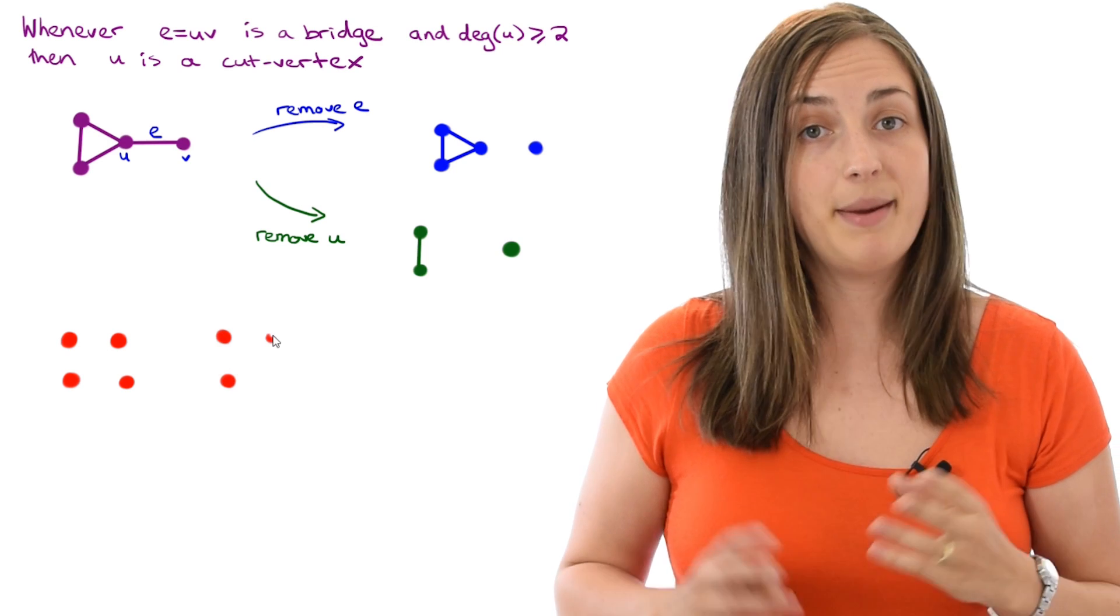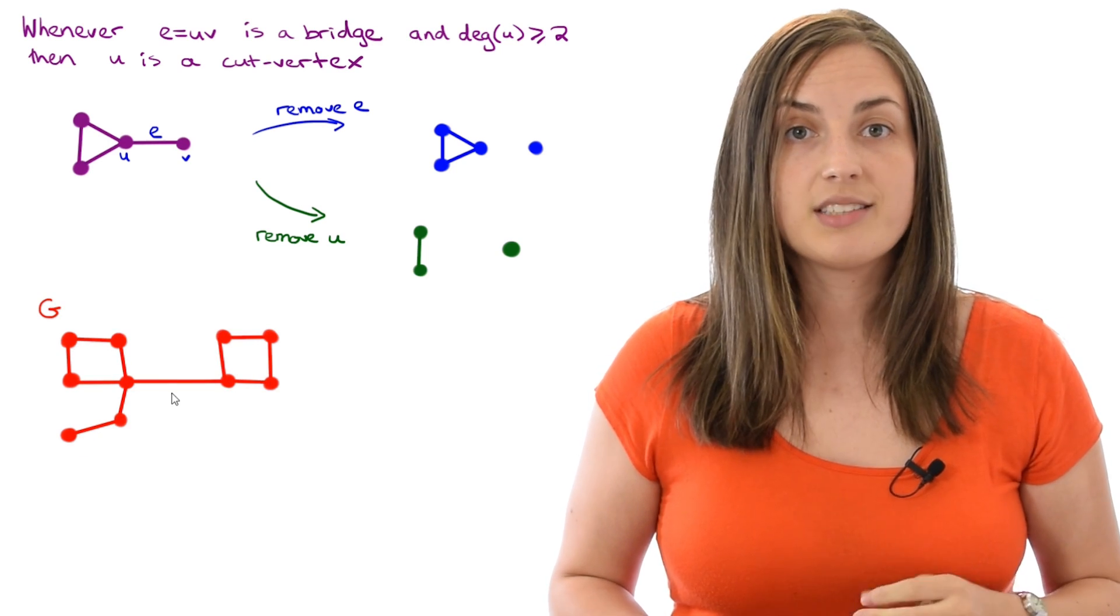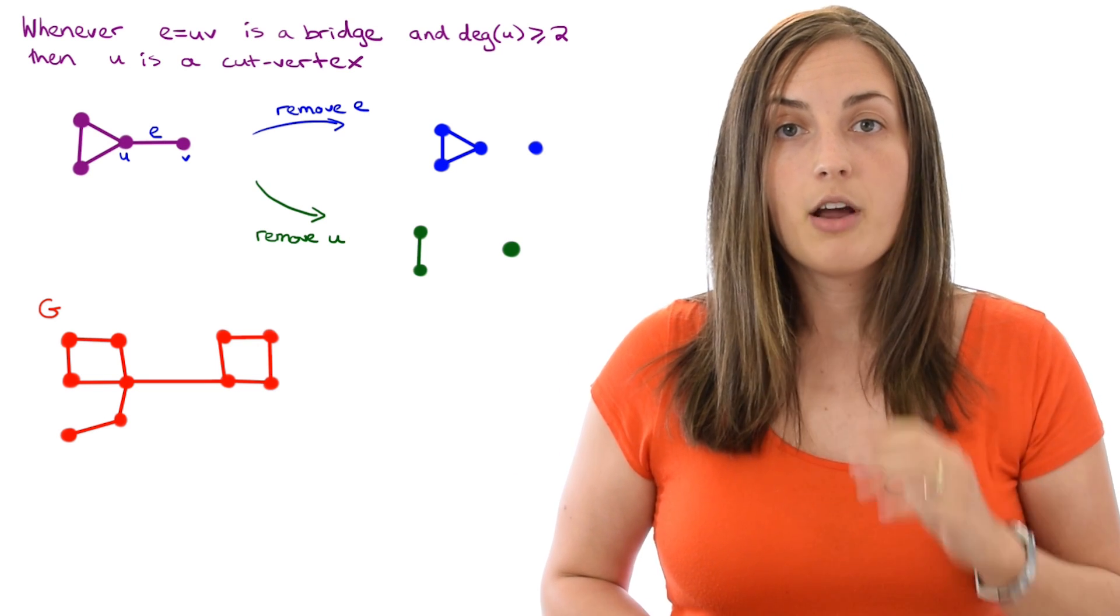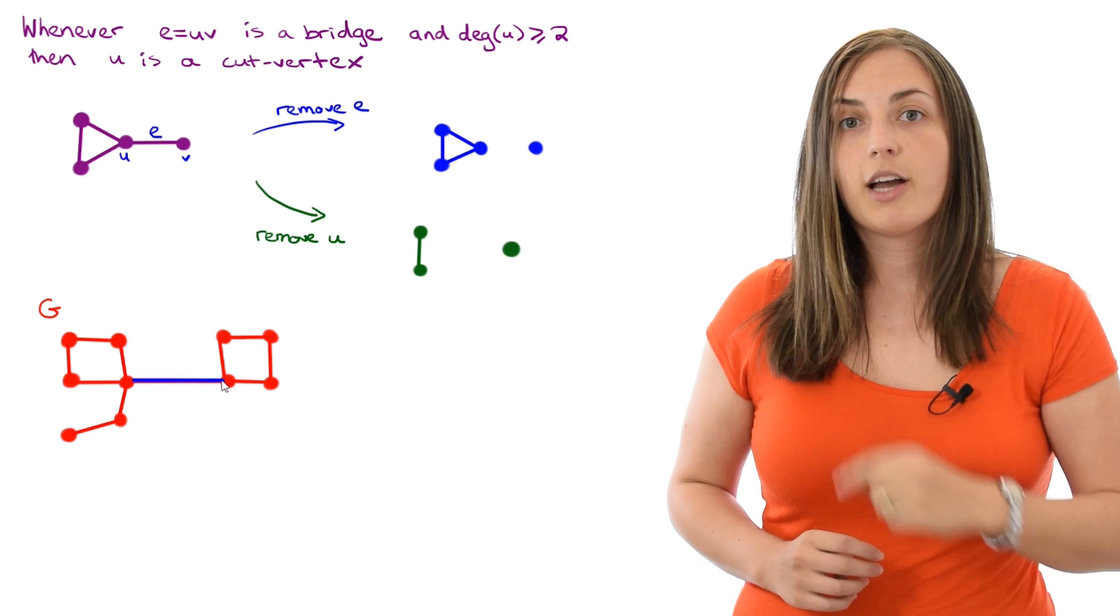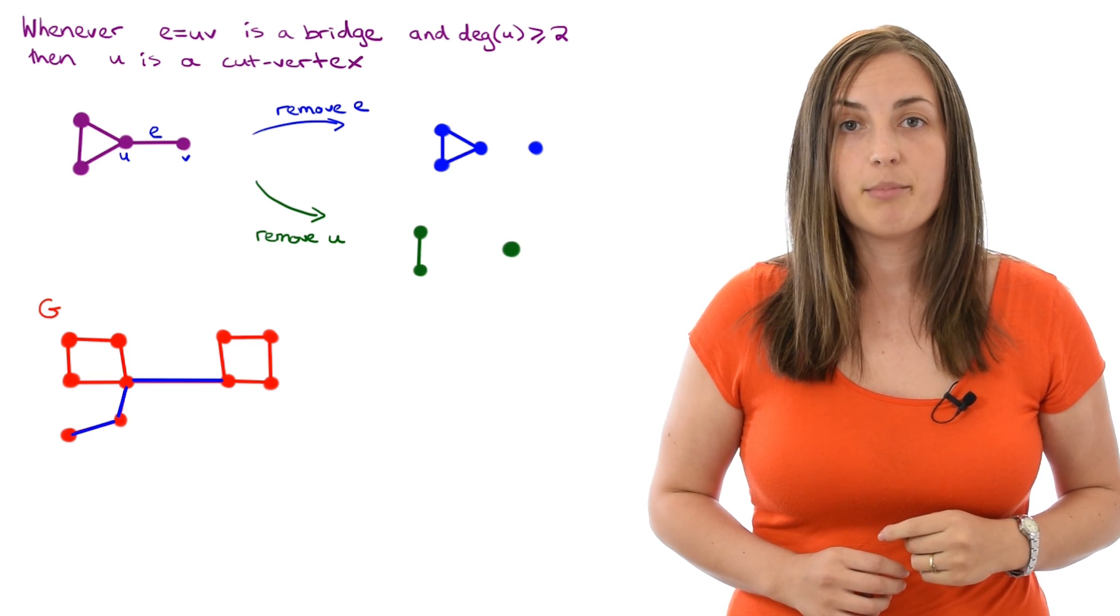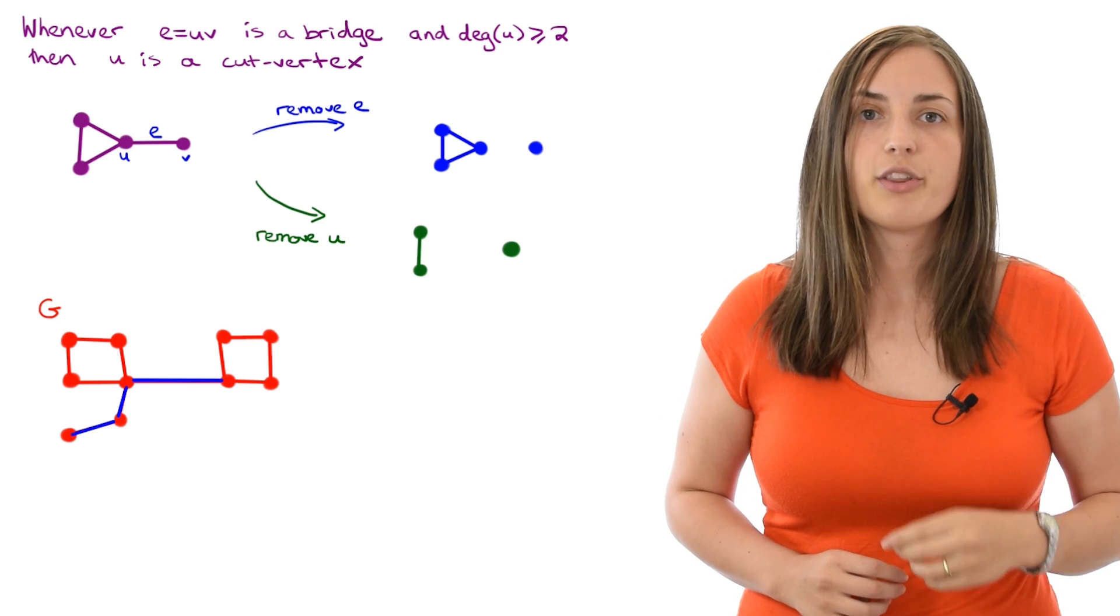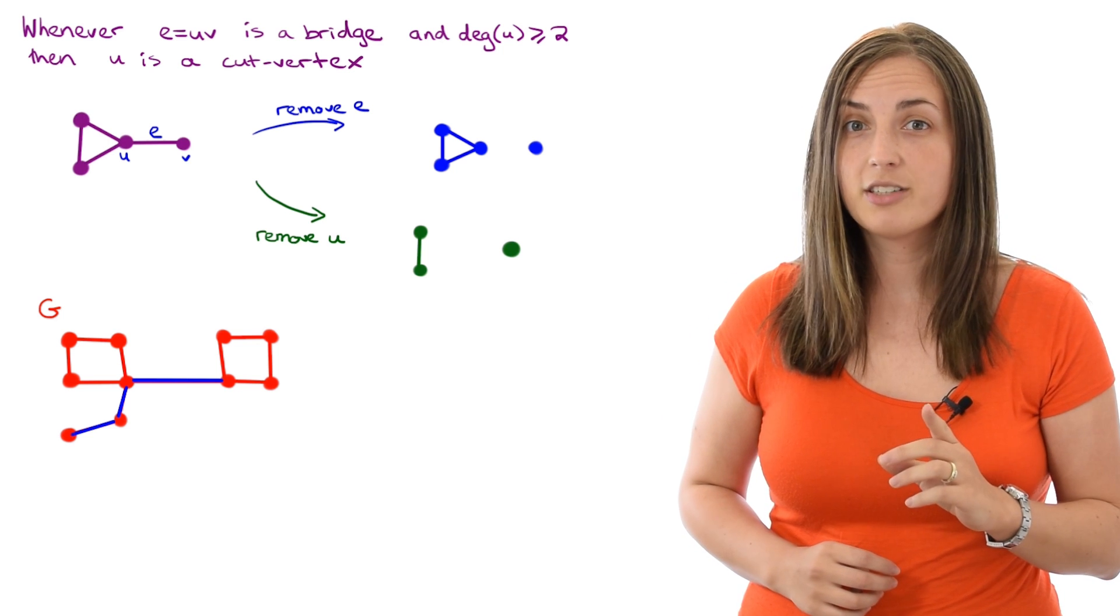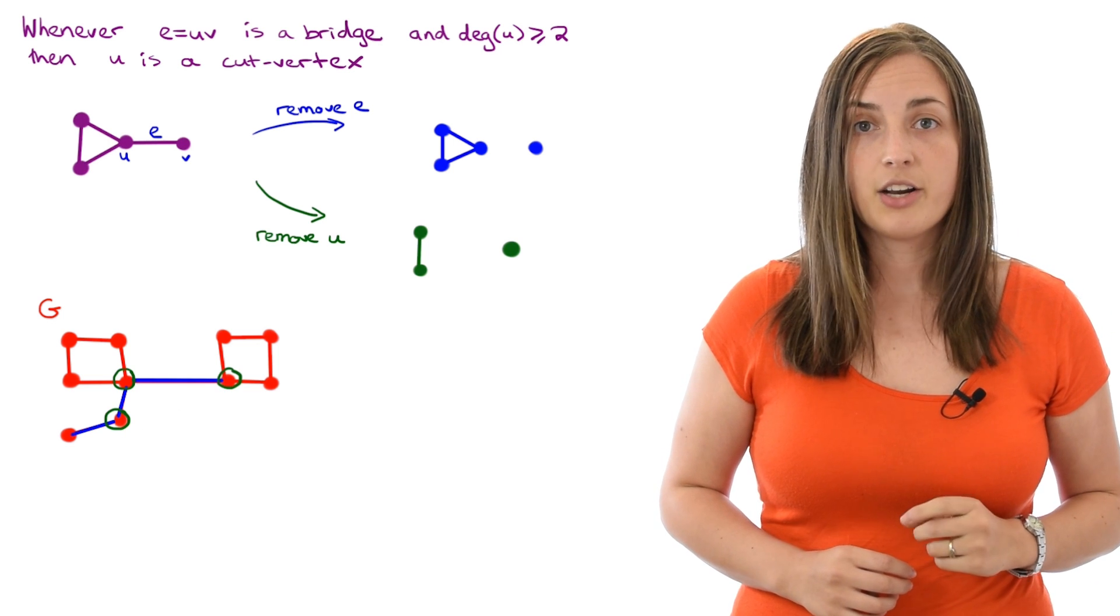Now let's take a look at a bigger example. Here is our graph G, and what I want to do is think about where are the bridge edges. If you want, pause the video and check for yourself. I'm going to highlight them in blue. Here we go, we have these bridge edges highlighted in blue. And now I'm going to highlight the cut vertices of this graph, and I'll circle them in green. You may want to pause for yourself before I do so. Here they are. All the cut vertices are highlighted in green.